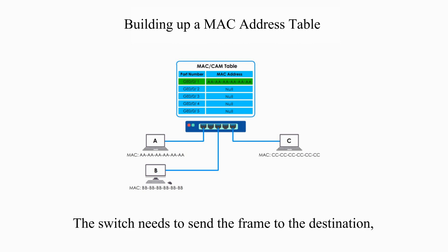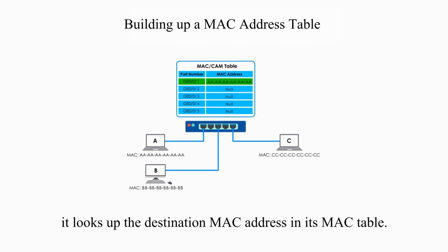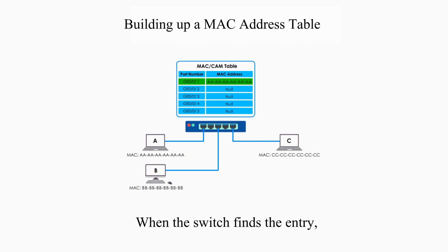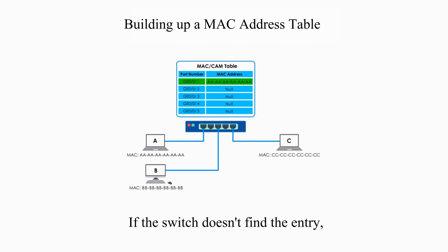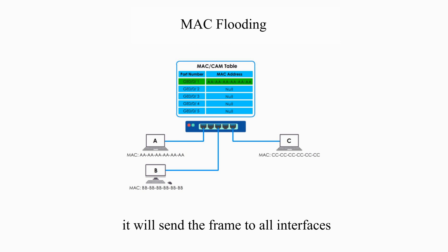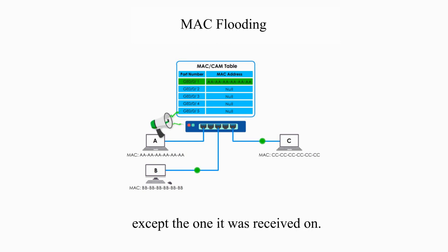The switch needs to send the frame to the destination. It looks up the destination MAC address in its MAC address table. When the switch finds the entry, it will forward the frame to the destination. If the switch doesn't find the entry, which is the case in this example, it will send the frame to all interfaces except the one it was received on.